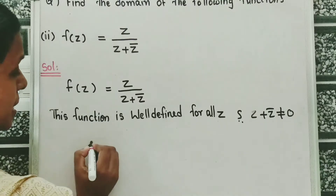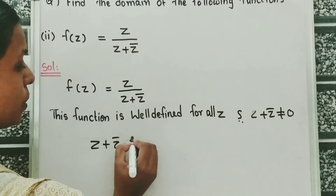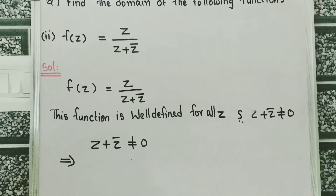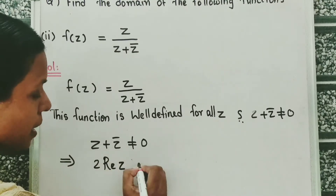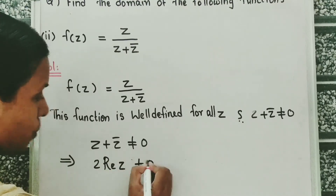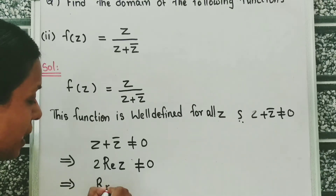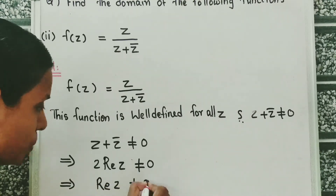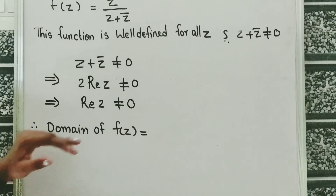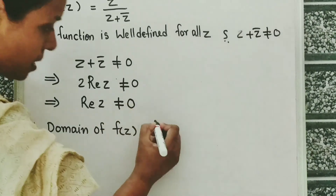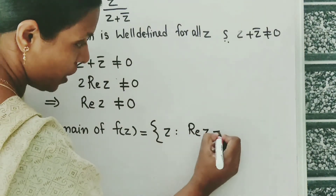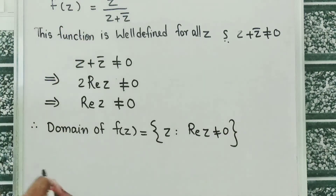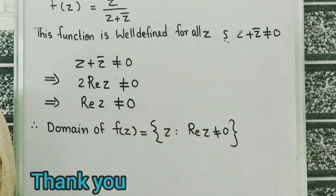Now, z plus z conjugate not equal to 0 — we know that z plus z conjugate equals 2 times the real part of z. So 2 times real z is not equal to 0, which implies real z is not equal to 0. Therefore, the domain of f of z is equal to the set of z such that the real part of z is not equal to 0.